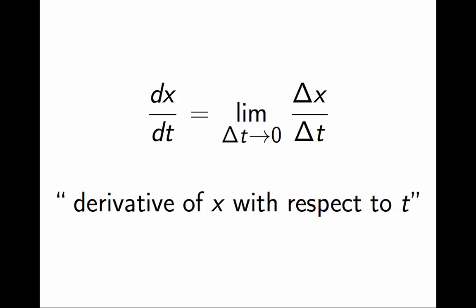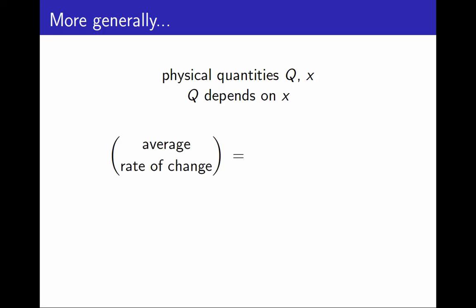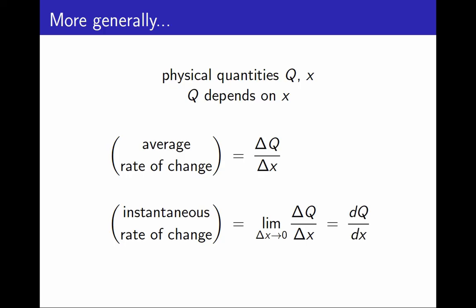In this example, I describe velocity as the rate of change of position with respect to time. But more generally, I can do the same thing with any two physical quantities if one depends on the other. If q and x are physical quantities, and q depends on x, I can define the average rate of change as the change in q divided by the change in x, and I can define the instantaneous rate of change as the limit of the average rate of change as the change in x approaches 0. We will also call this the derivative of q with respect to x.